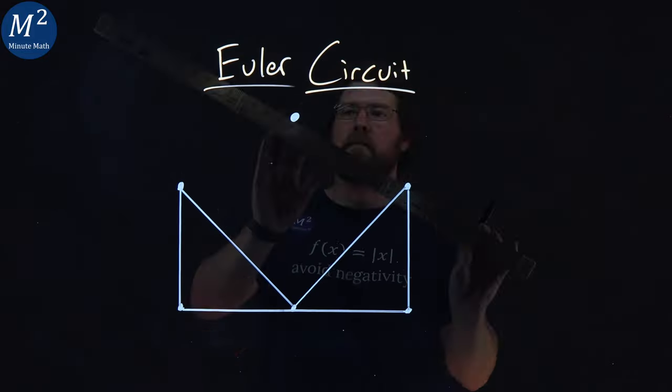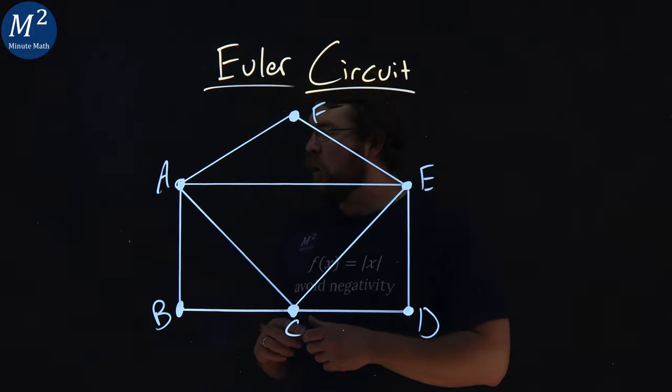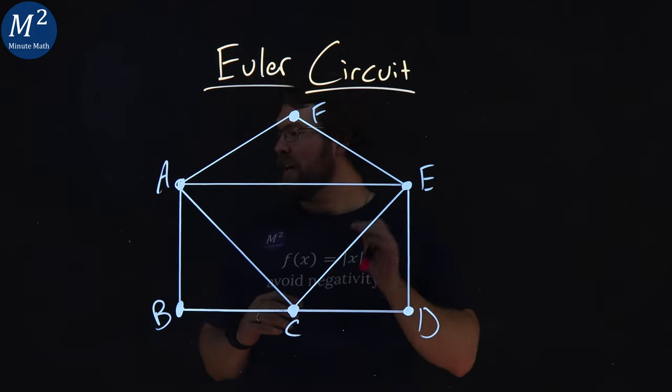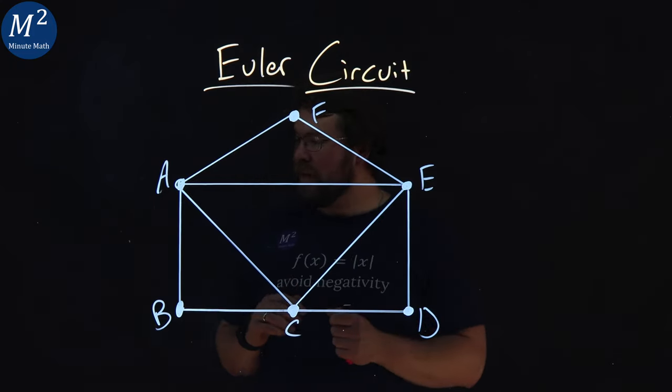What is an Euler circuit? An Euler circuit is a circuit that uses every edge in a graph with no repeats.